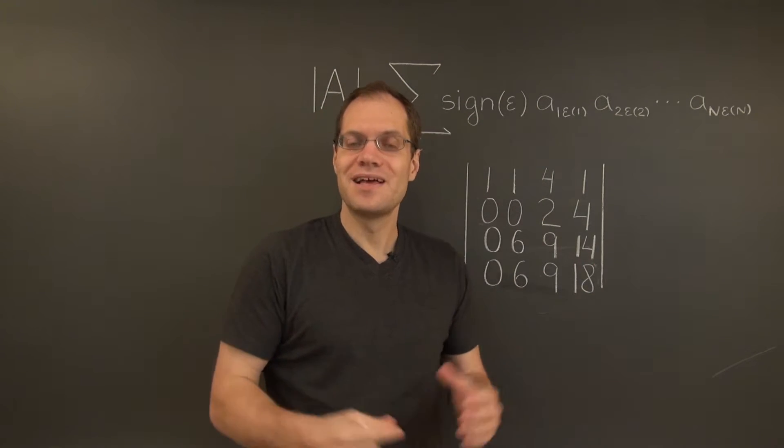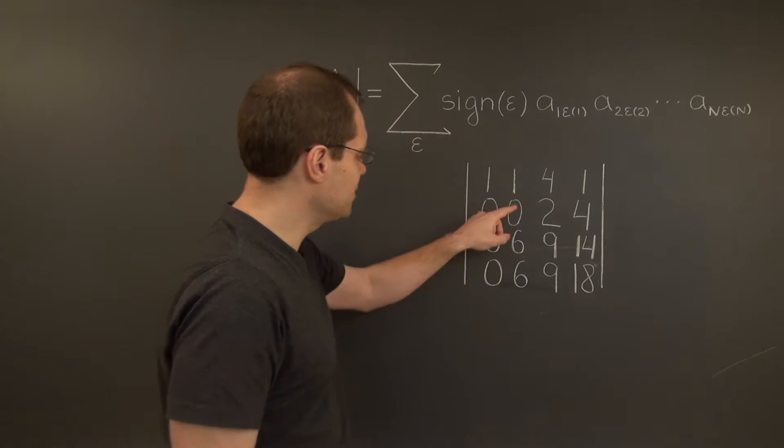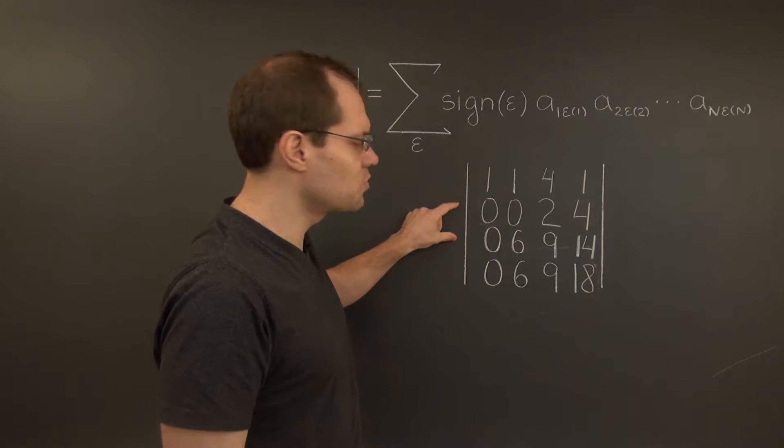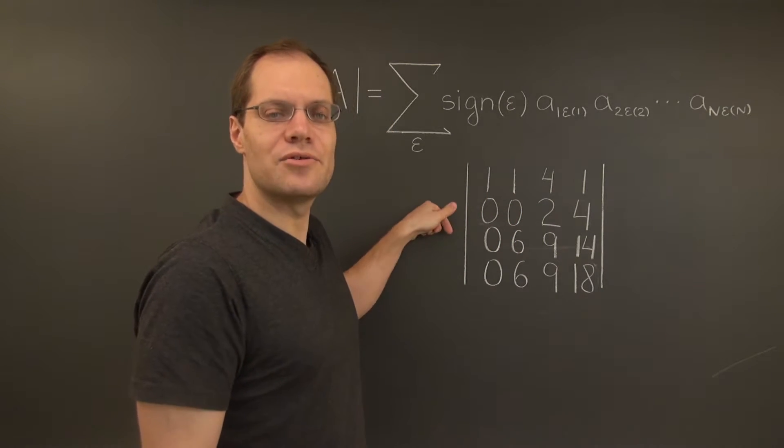Alright, next let's proceed systematically. We want a non-zero pivot in this spot, and this can be achieved by switching rows 2 and 3.